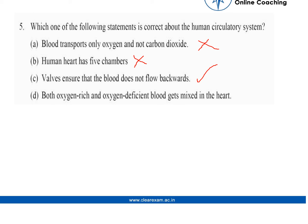The last statement is: both oxygen-rich and oxygen-deficient blood get mixed in the heart. No, they flow separately — oxygen-rich blood flows in arteries and oxygen-deficient blood flows in veins. So this statement is also false.